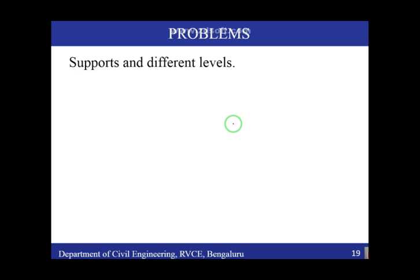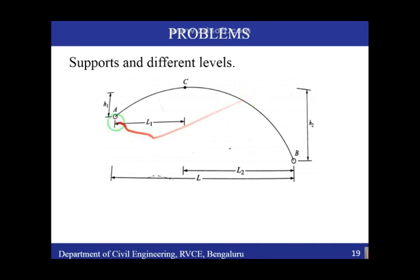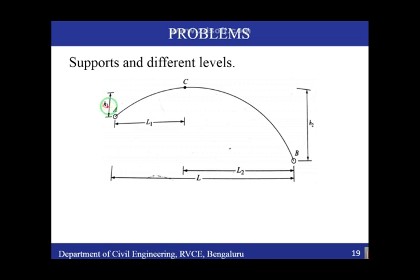The arch with different levels looks something like this: a similar arch with crown C, left support A, and right support B. For the left half we consider the height as h1, and for the right half as h2. Previously we used to consider just one maximum height h. Now we look at two heights — h1 towards the left side and h2 towards the right side — and two lengths: L1 for the left span, L2 for the right span, with total span L.